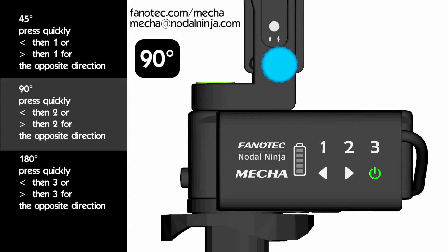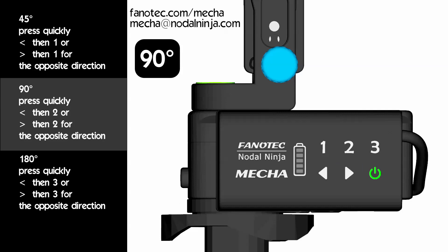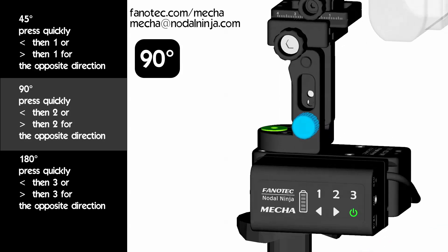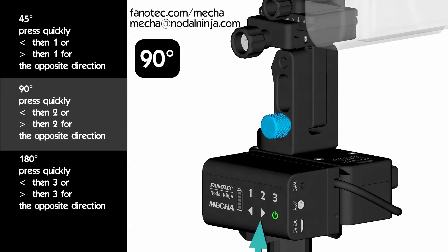Similarly, for 90 degrees rotations, use the left arrow and 2. Or right arrow and 2. Press the left arrow button, then quickly press 2. Press the right arrow button, then quickly press 2, for the opposite direction.